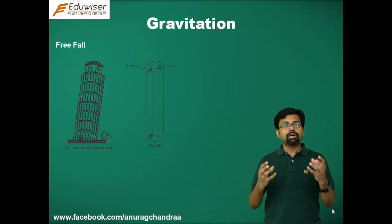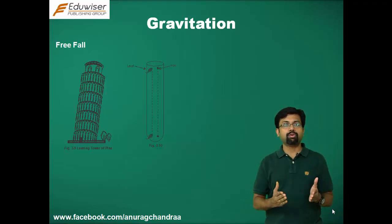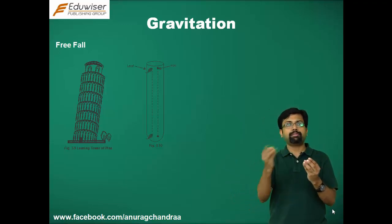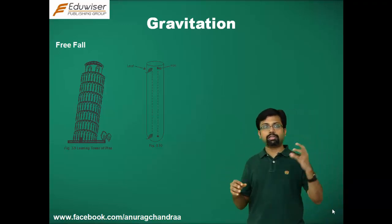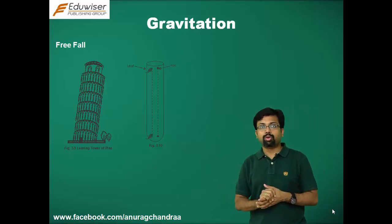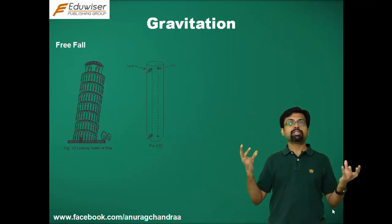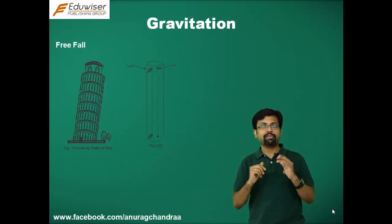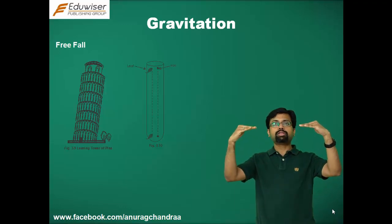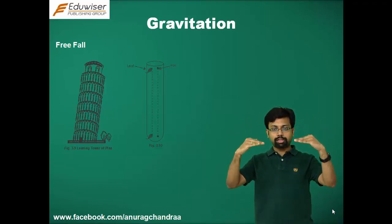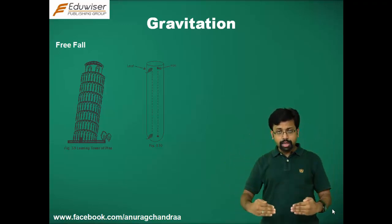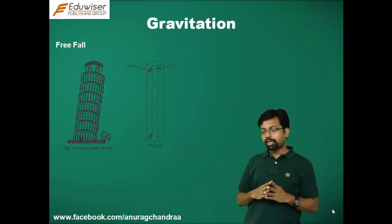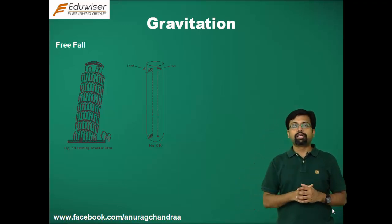The gravitational pull of the earth equals mass times acceleration, from Newton's second law of motion. Let M be the mass of the body and a be the acceleration. Since balls of different masses reached the ground at the same time, it indicates they experienced different forces but the same acceleration. Released from the same height with initial velocity zero, they fall together only if the acceleration acting on both is the same.